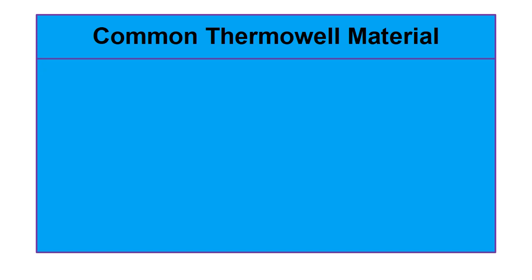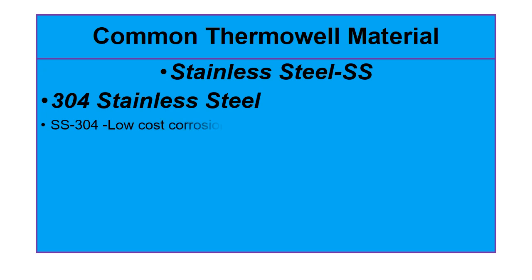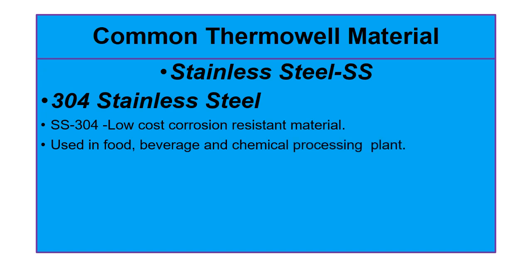The next material is stainless steel or SS. Stainless steel is the most popular material, and different material grades are available. Grade SS 304 is a low cost corrosion resistant material. SS 304 is extensively used in food, beverage, and chemical processing plants where good corrosion resistance is required. SS 304 is also available in a low carbon version, generally known as SS 304L.